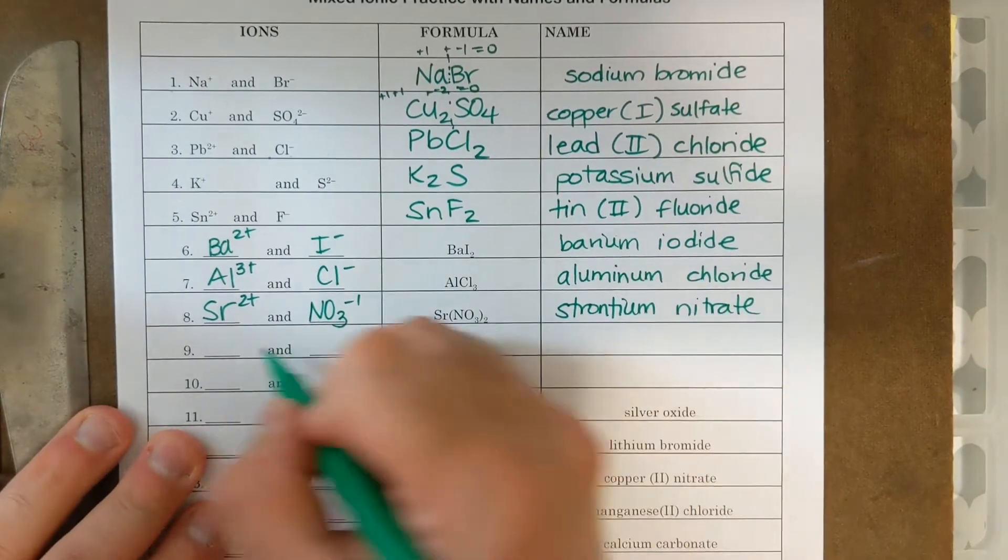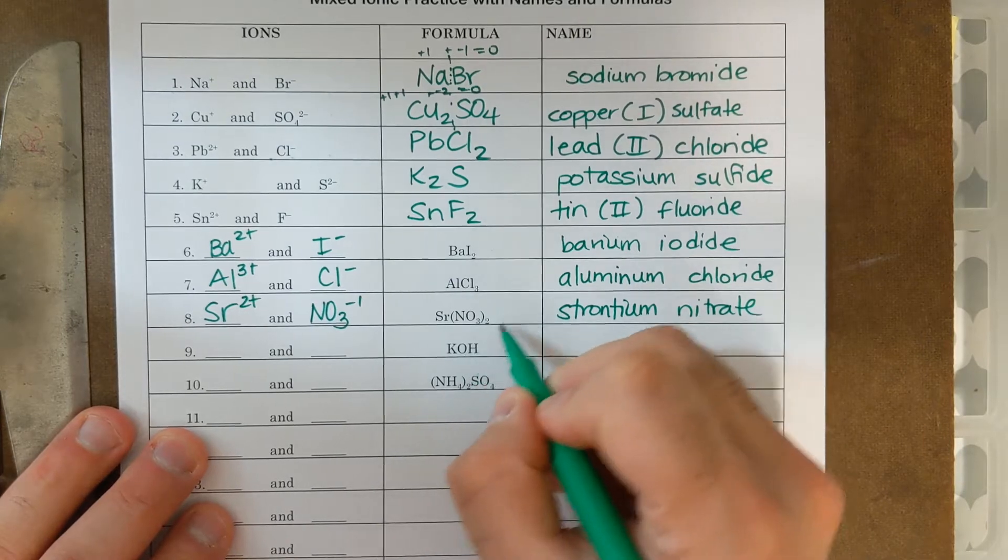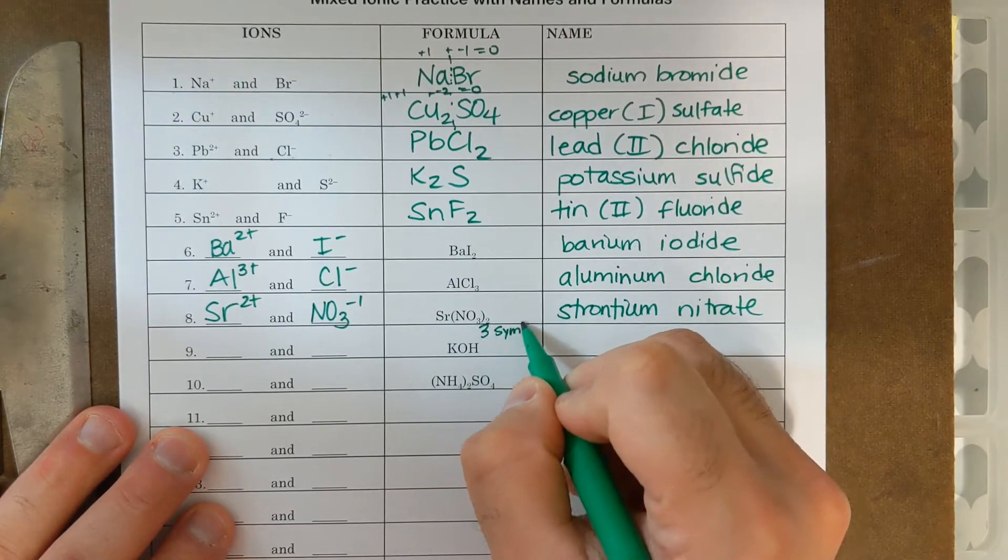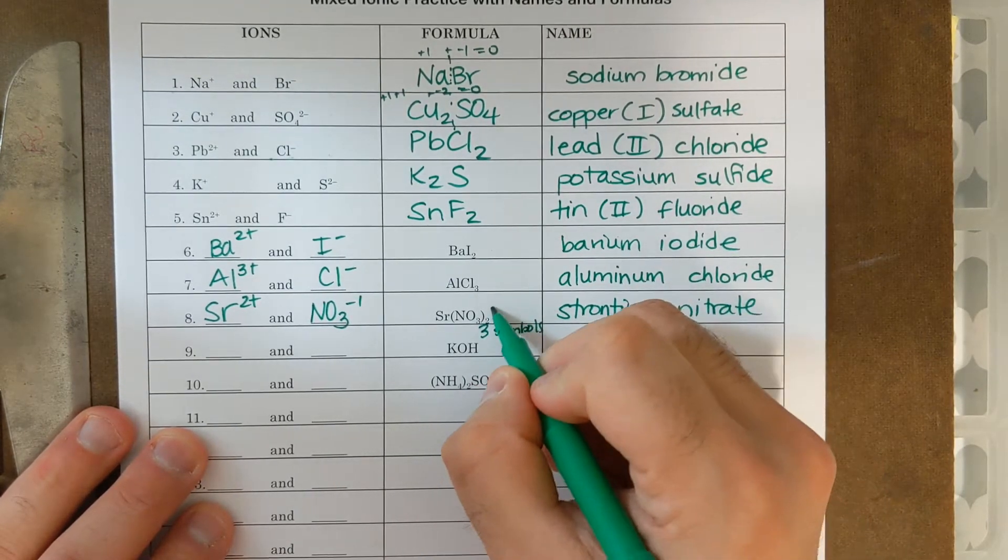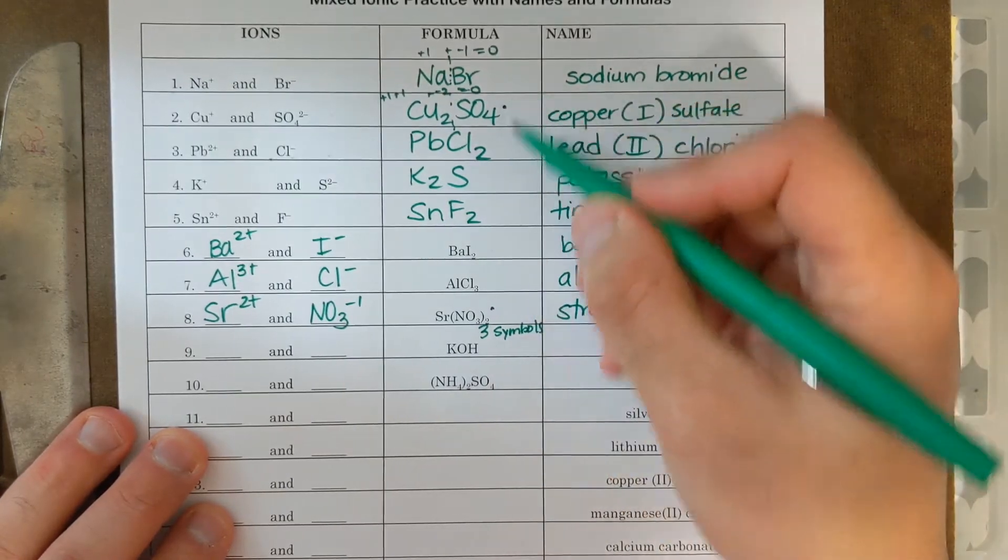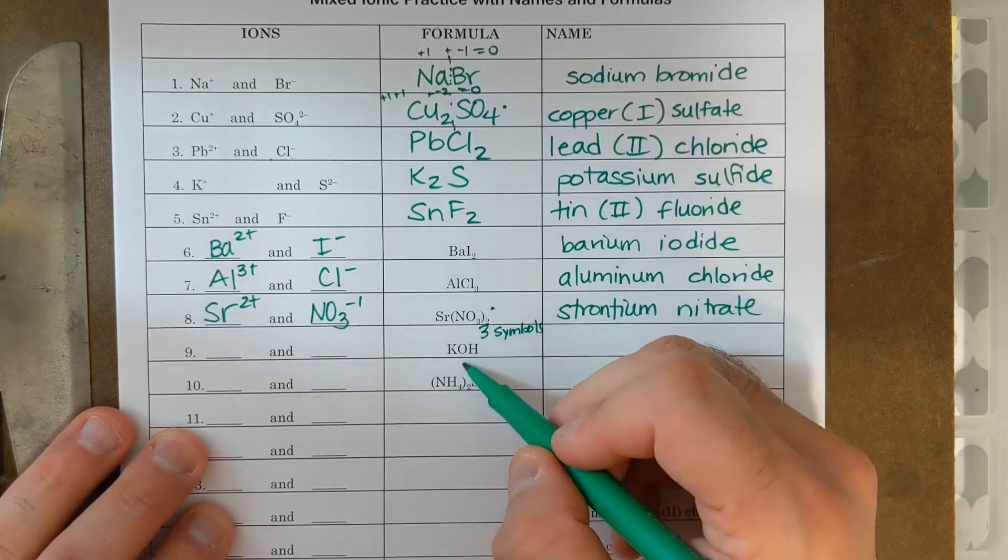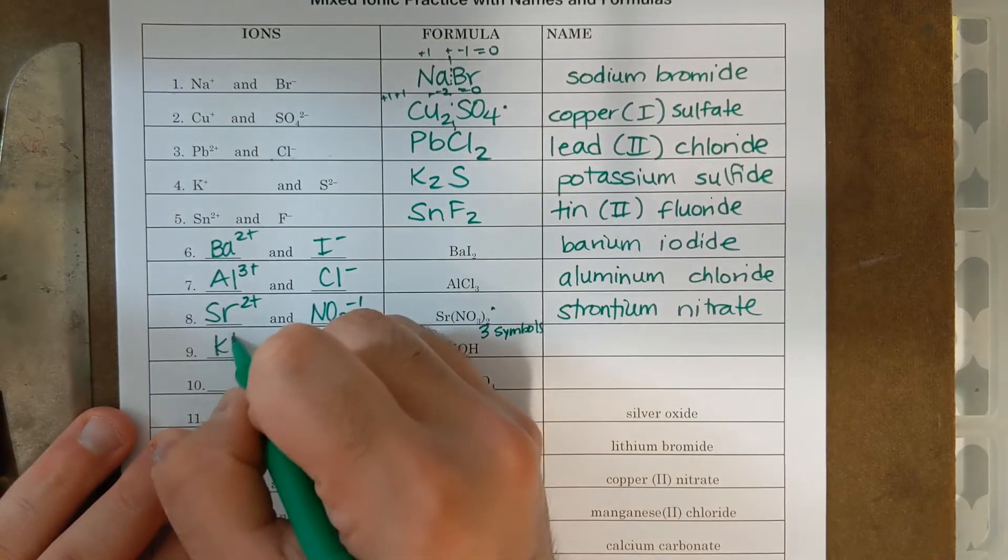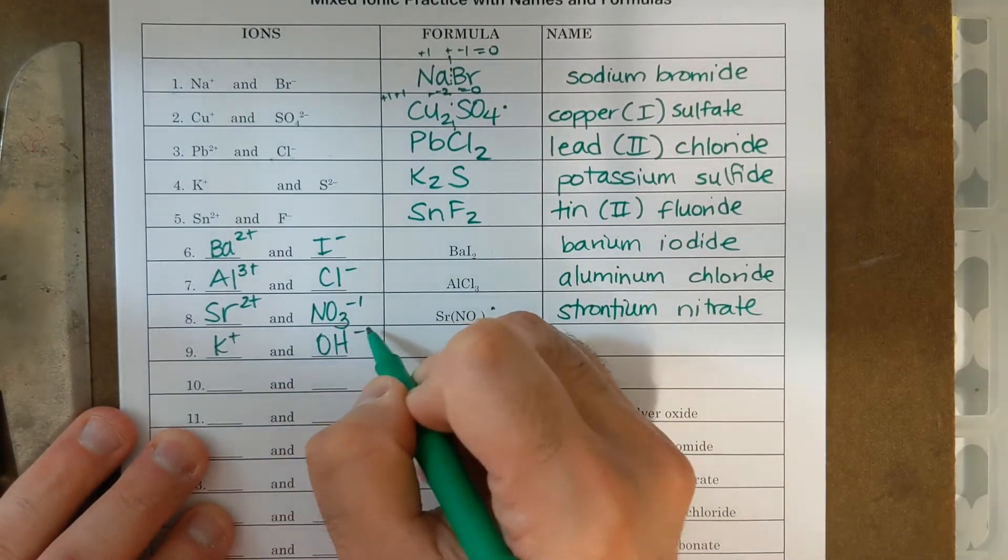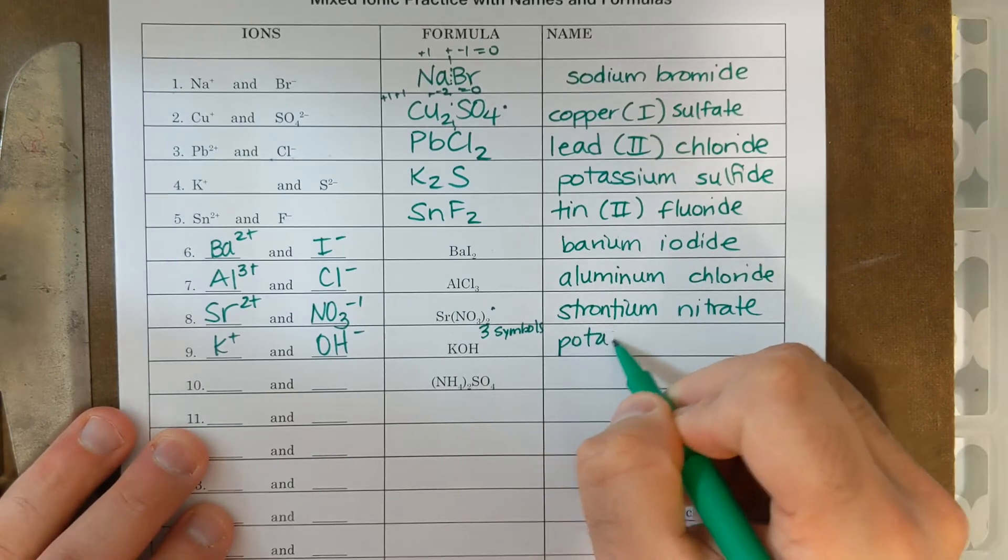Next one is KOH, it has three symbols, that means there's a polyatomic ion. I didn't mention that here, or up here, but if I have three or more symbols, that must mean I have a polyatomic ion present. I have K plus, and OH minus, that's going to be potassium hydroxide.